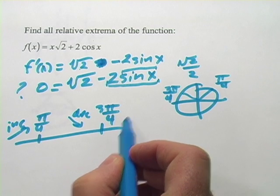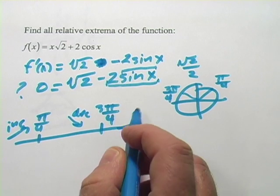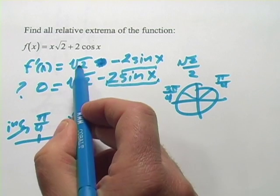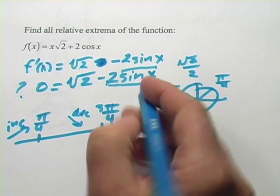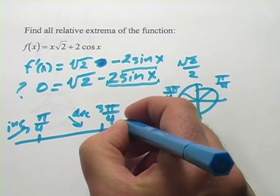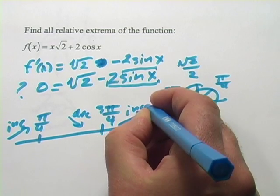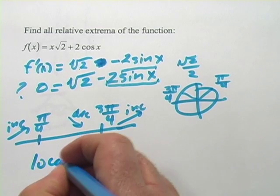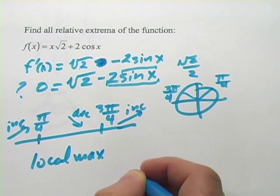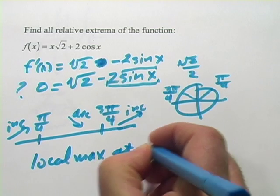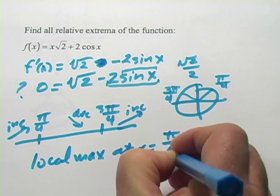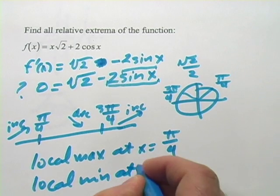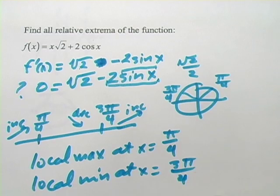And then we could test pi out here. And the sine of pi is again 0. And this would be square root of 2 minus 0, or a positive number. And that would be increasing again. So it looks like we have our local max at x equals pi over 4. And our local min at x equals 3 pi over 4.